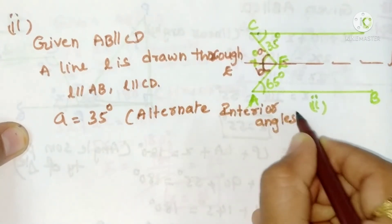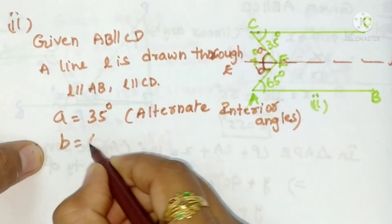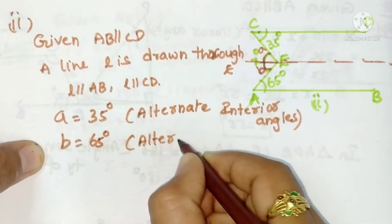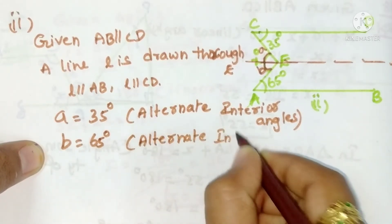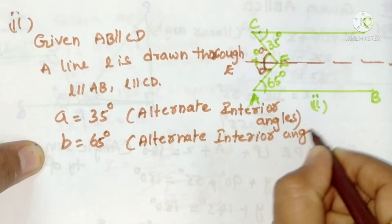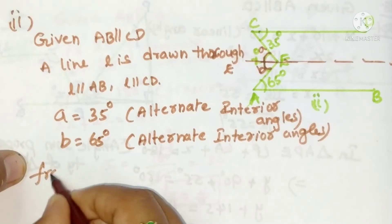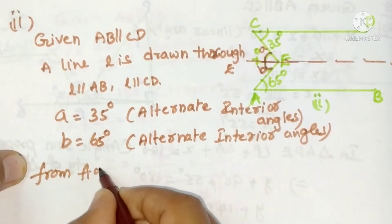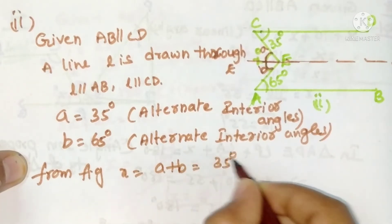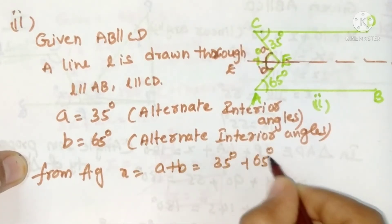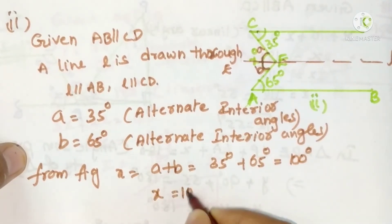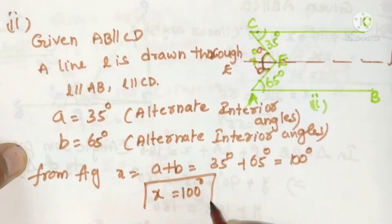And b equals 65 degrees. The reason is alternate interior angles. From the figure, x is equal to a plus b. So x equals 35 degrees plus 65 degrees, which is 100 degrees. So x equals 100 degrees.